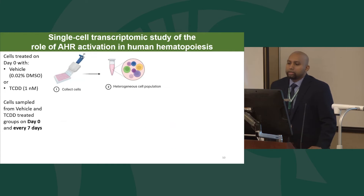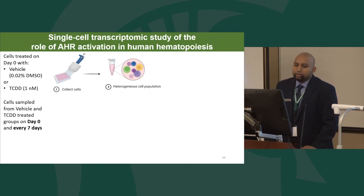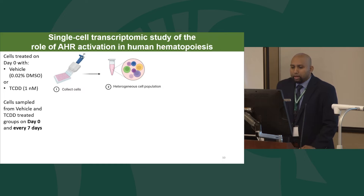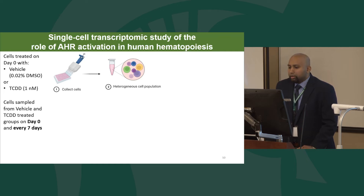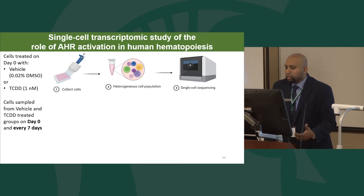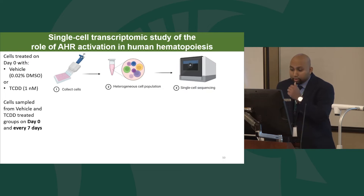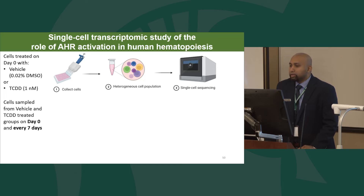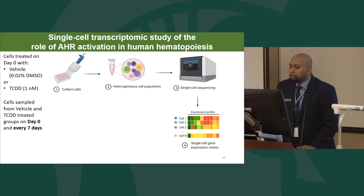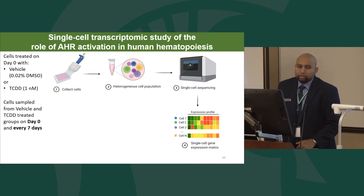For the single cell transcriptomic study, cells were treated on day zero with either one nanomolar TCDD or 0.02% DMSO as vehicle control. Cells were collected on day zero and every seven days from both groups. Using 10X Chromium profiling for single cell mRNA sequencing, we generated reads from individual populations, and through a series of bioinformatics analysis tools, obtained single cell gene-by-cell expression matrices. Our dataset had approximately 28,000 cells and about 14,000 genes.